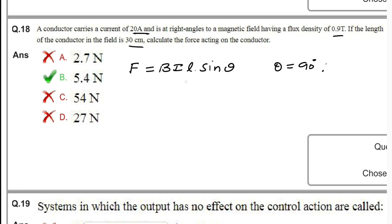B is 0.9, current is 20 amperes, length is 30 cm = 30 × 10^(-2) meters. If we solve this: F = 0.9 × 20 × 0.3 = 5.4 newtons. This is the answer.